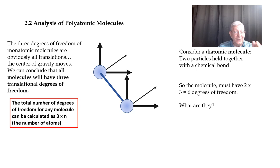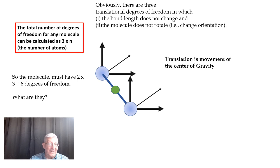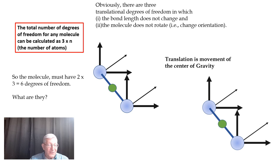What are those six degrees of freedom for a diatomic molecule? The center of gravity of the two-atom system can move in three dimensions — so translations represent three degrees of freedom. That takes care of three of our six. The remaining three come from rotations and vibrations.